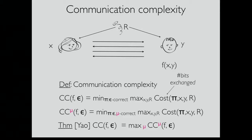Yao's theorem — the min-max theorem that probably everybody is very familiar with — says that the communication complexity is equal to taking the worst distribution of inputs and looking at the distributional complexity for that fixed worst-case distribution.